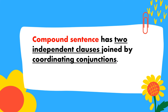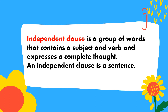A compound sentence has two independent clauses joined by coordinating conjunctions. An independent clause is a group of words that contains a subject and verb and expresses a complete thought. An independent clause is a sentence.